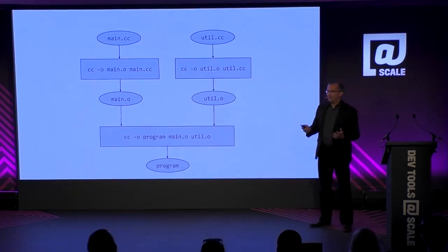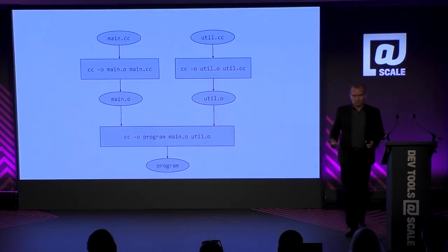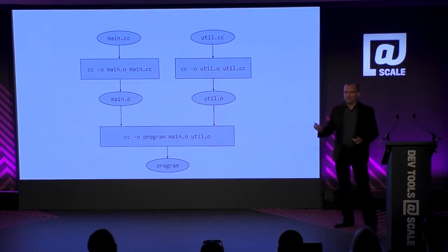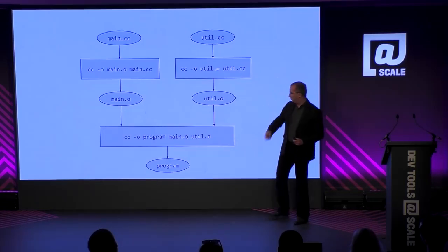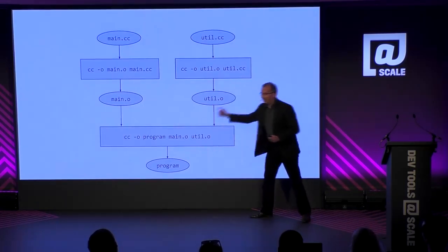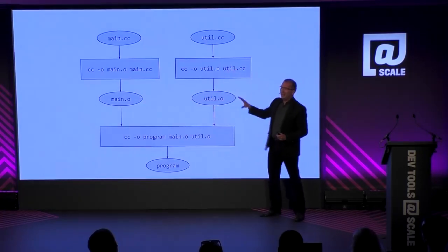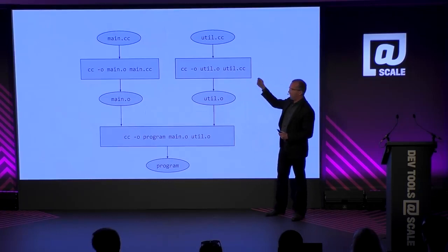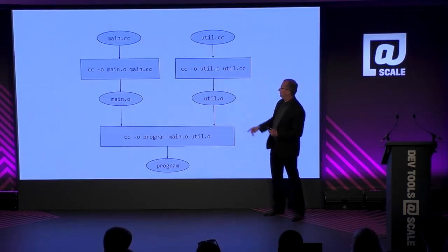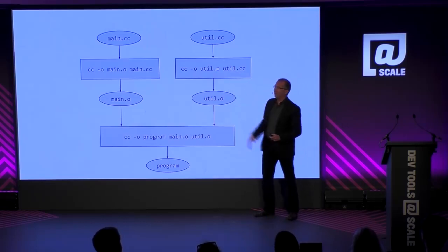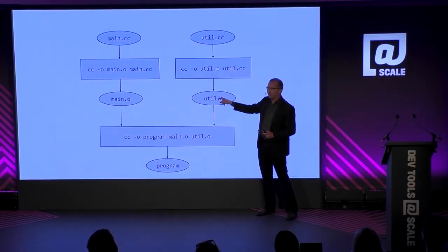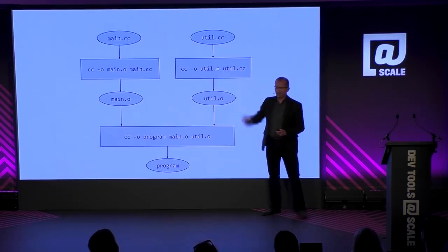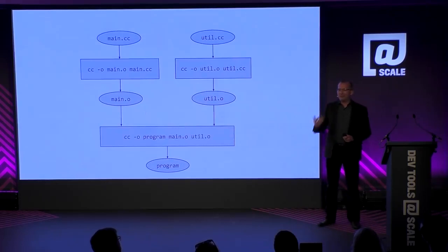So this is basically a graph, and all the essence of a build system is that you do a traversal of this graph. You're asked to build an artifact — a program — and then you walk this graph back and discover things that are not up to date. If you have nothing, you obviously have to build everything. If you already have the utility object file, as long as its inputs don't change, you don't have to execute any of the actions. That's the basic idea of a build system.